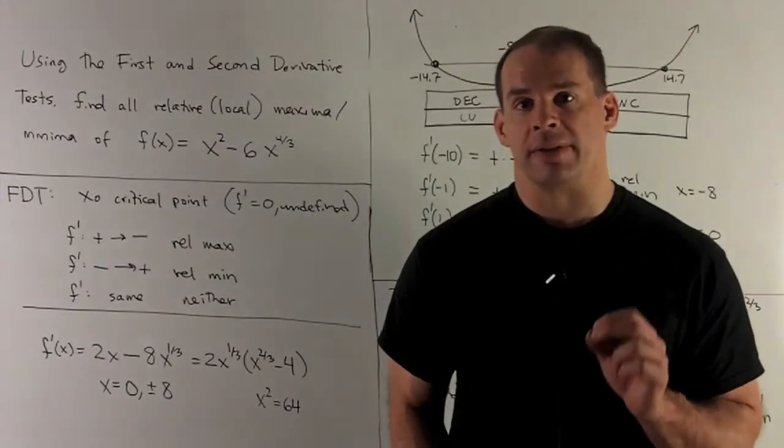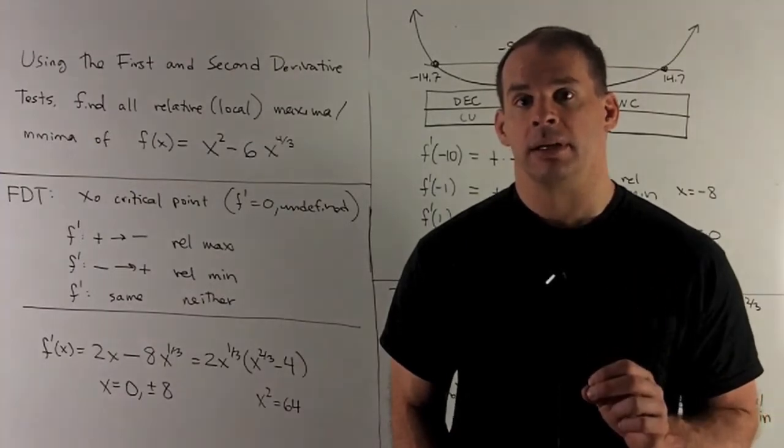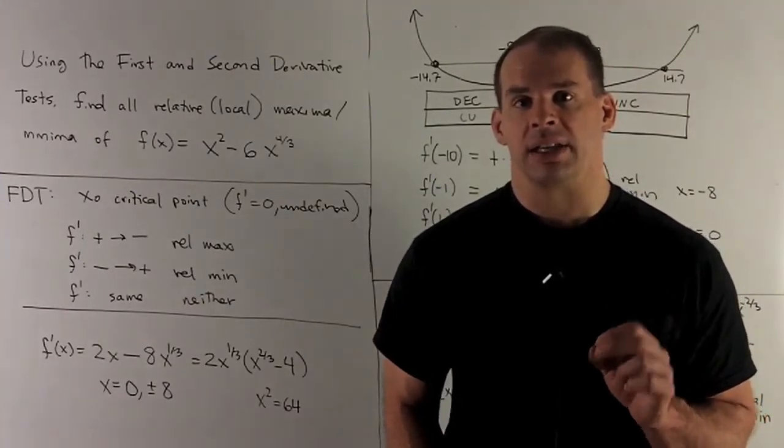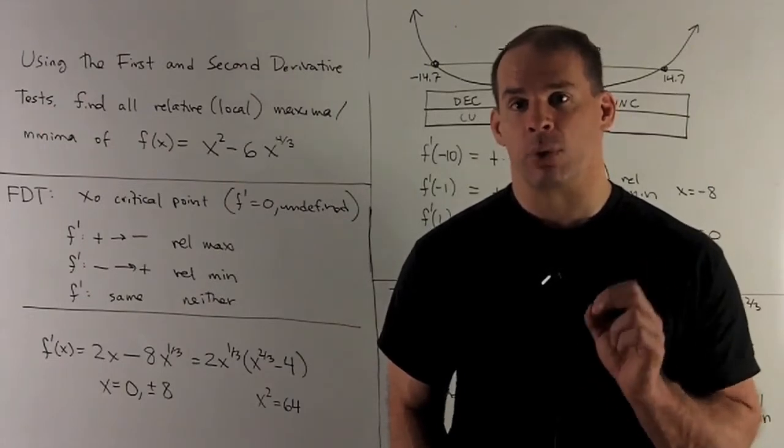Using the first and second derivative tests, find all relative maxima and minima of function f(x) equal to x squared minus 6x to the four-thirds.